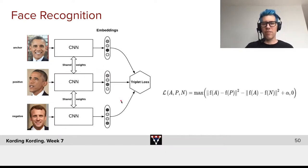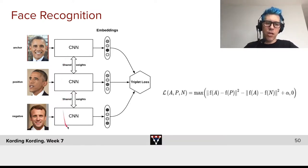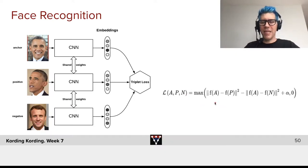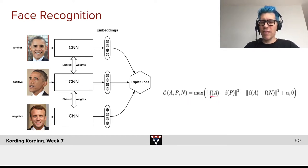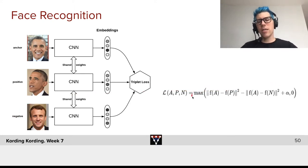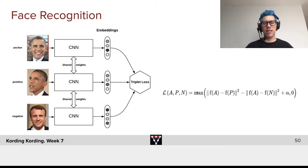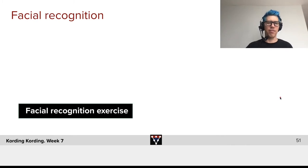We often use triplet loss functions, where we take an anchor image, one image of the same person (positive), and an image of a different person (negative). All three pass through the same ConvNet — the same image-to-embedding mapping. The triplet loss requires that the anchor-positive similarity is high and the anchor-negative similarity is low, with a maximal gain cutoff to prevent the network from over-specializing on a small number of anchor-positive samples. Why not try to understand this approach using the facial recognition exercise?